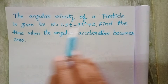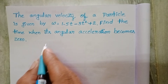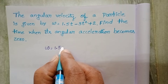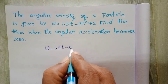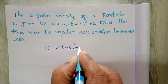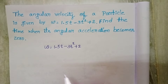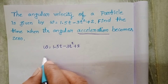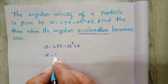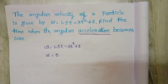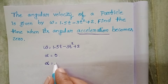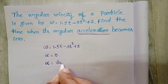The angular velocity of a particle is given by omega equals 1.5t minus 3t squared plus 2. Find the time when its angular acceleration becomes 0. The given condition is alpha equals 0, where alpha is angular acceleration — the rate of change of angular velocity.